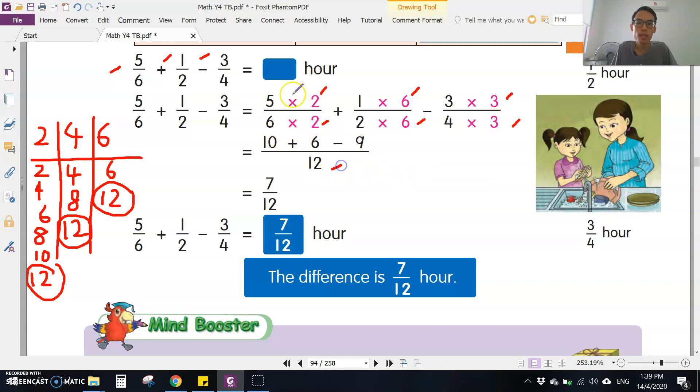All denominators become 12. Five times 2 is 10, one times 6 is 6, three times 3 is 9. Then add: 10 plus 6 is 16. 16 minus 9 is 7. So the final answer is 7/12 hour. The difference is 7/12 hour.